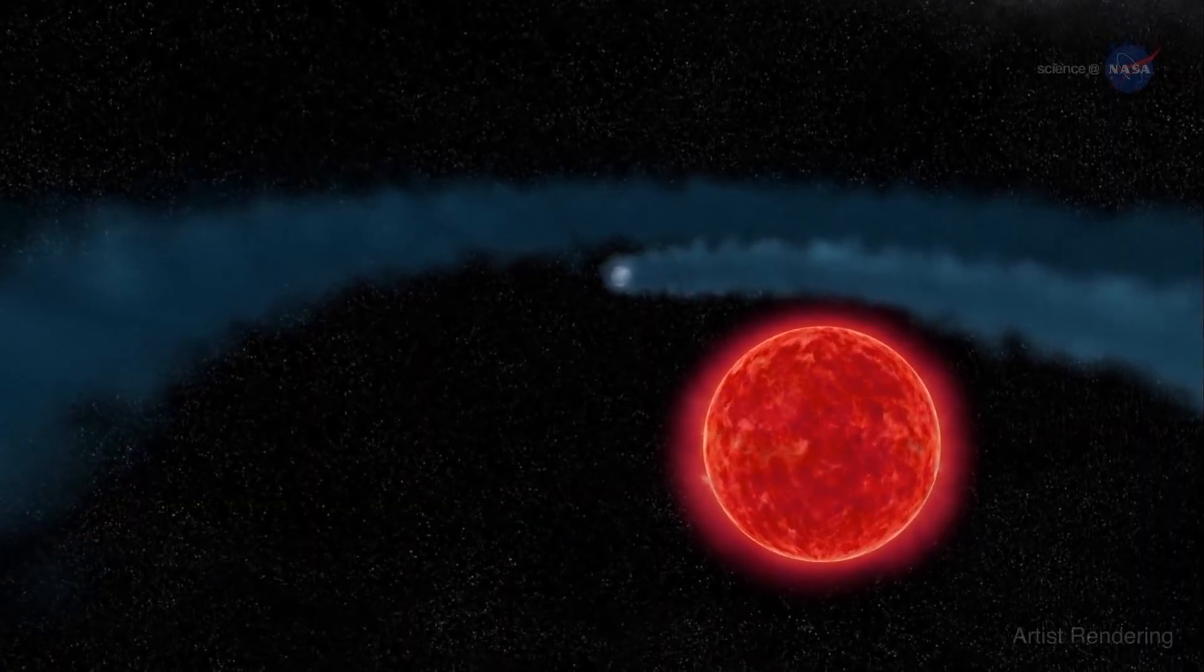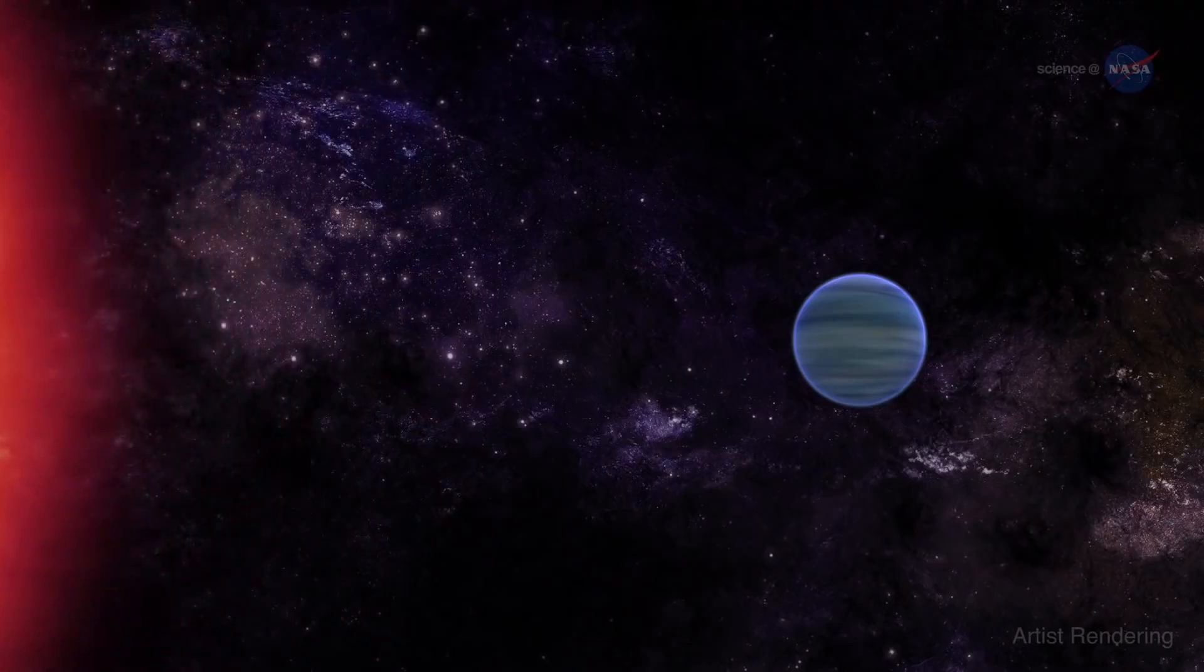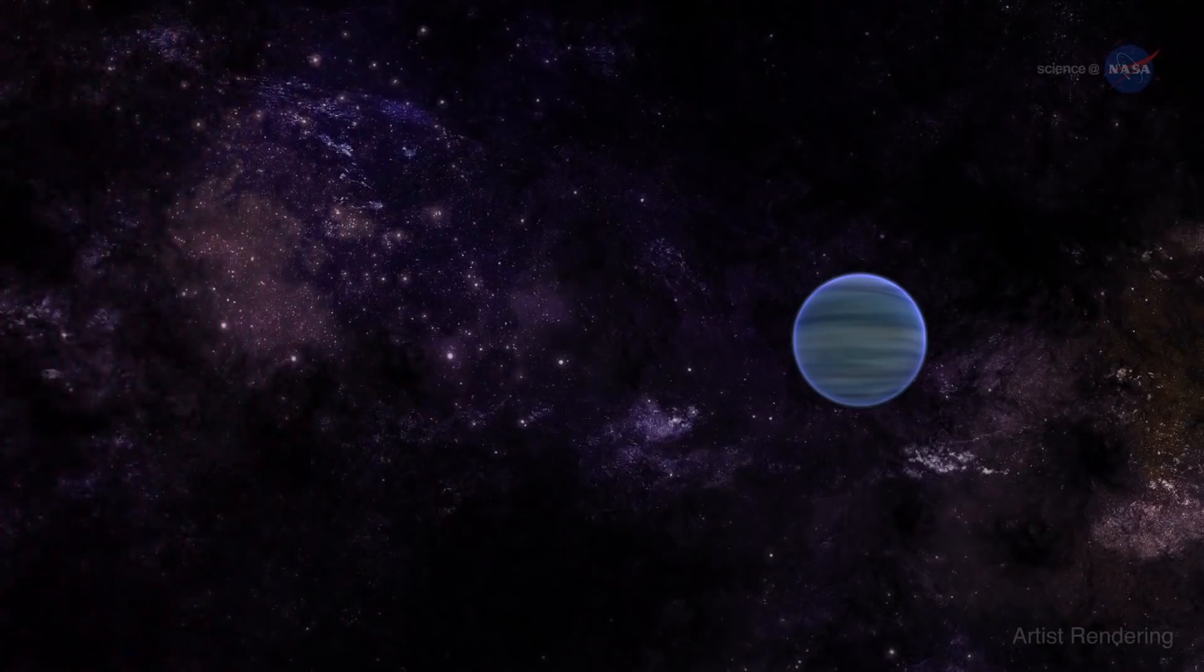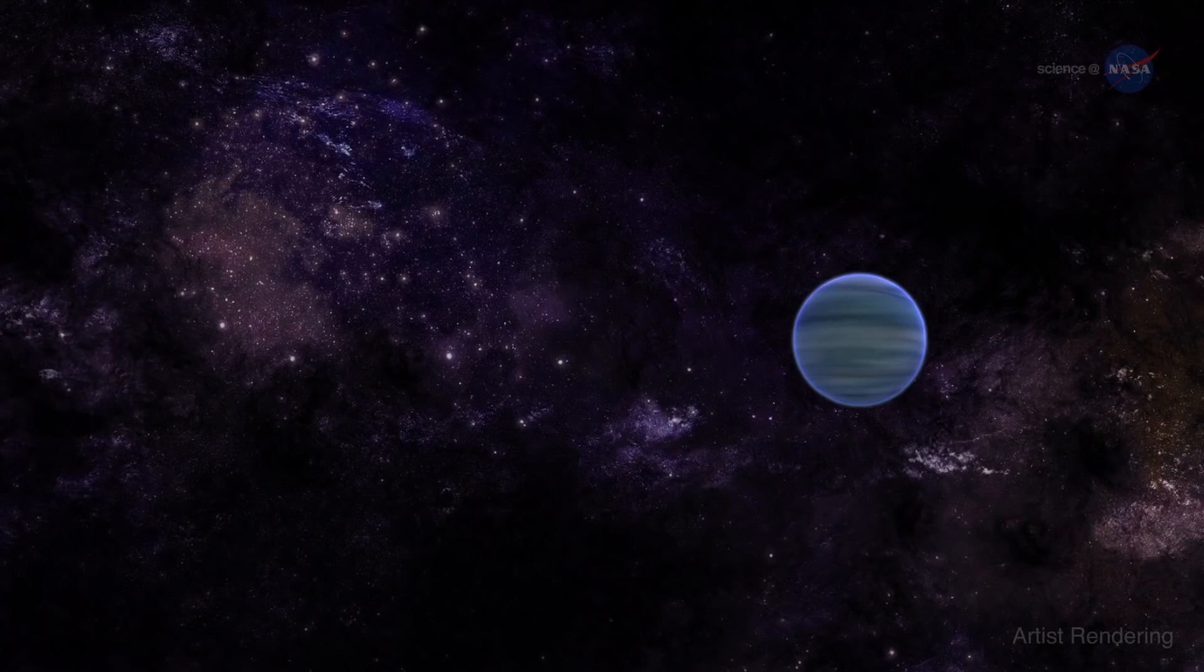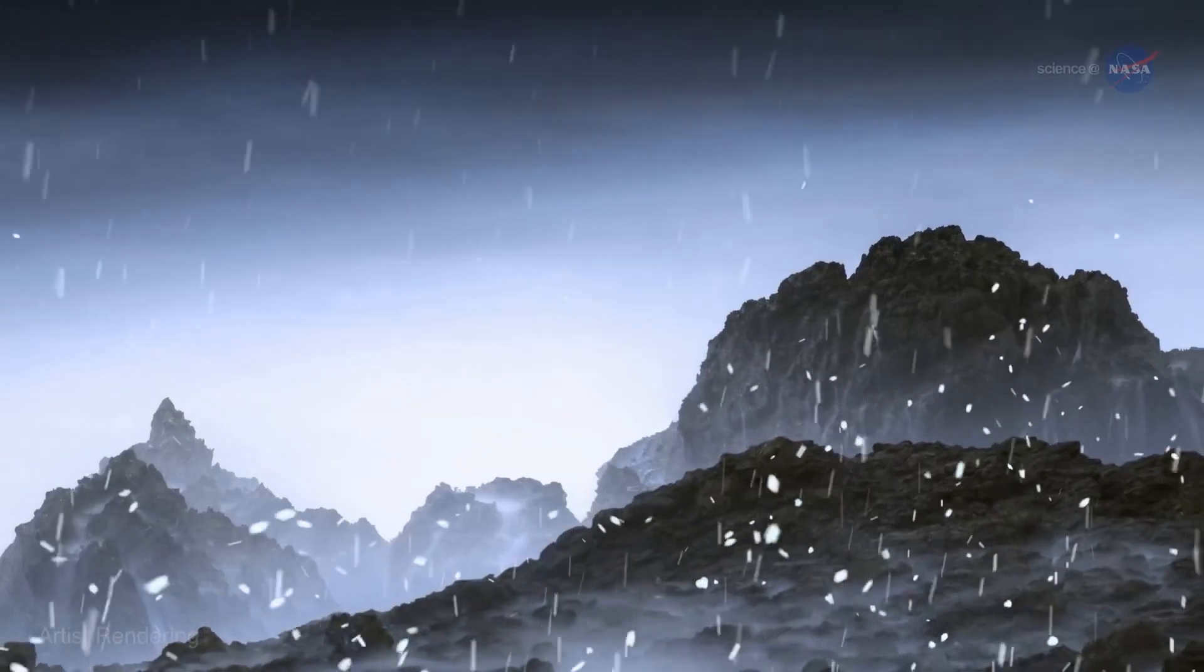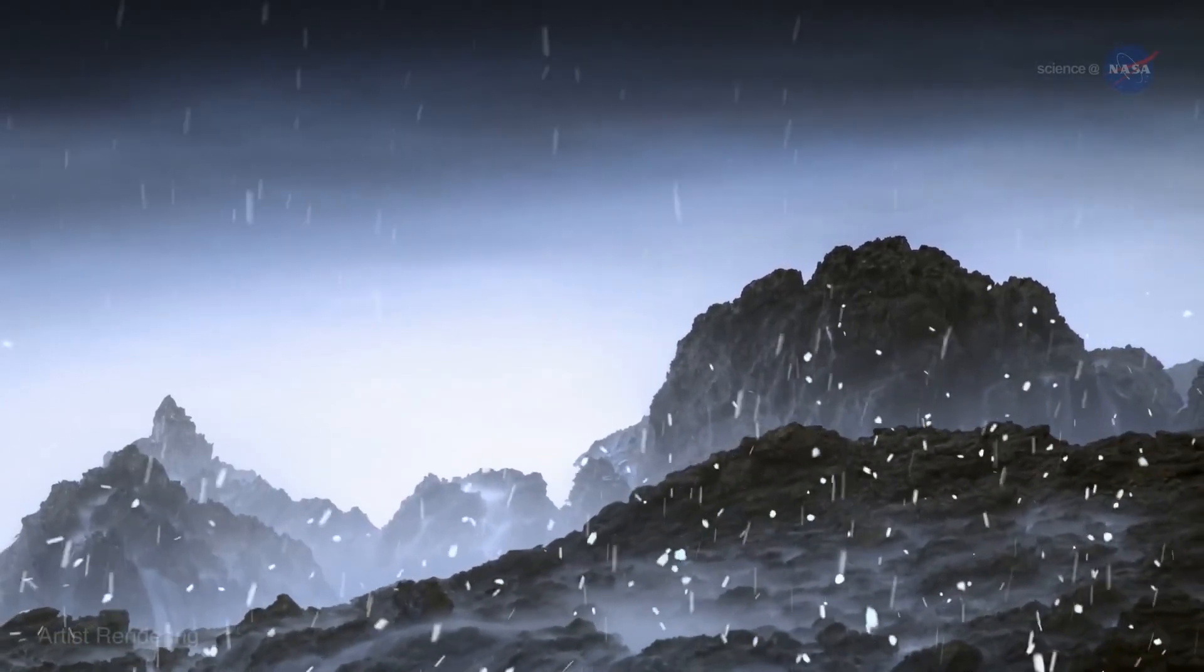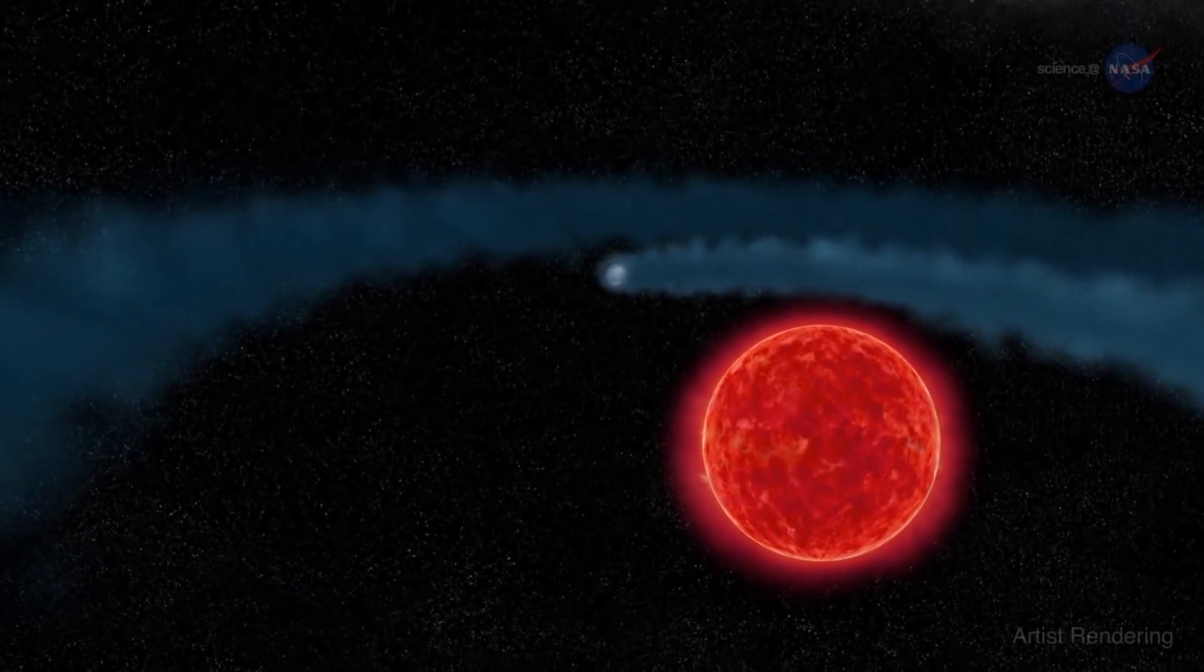Gliese 436b is a hot ice giant. Despite being close to its star, Gliese 436b maintains a thin hydrogen-helium atmosphere which creates high pressure and allows the presence of exotic forms of ice, such as hot ice or burning ice on its surface.